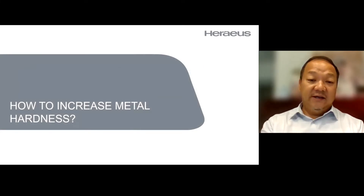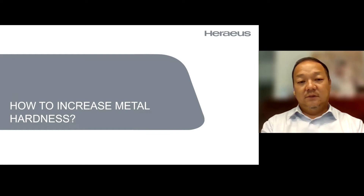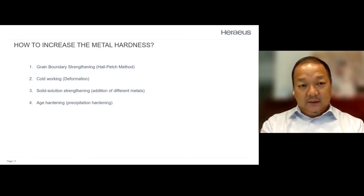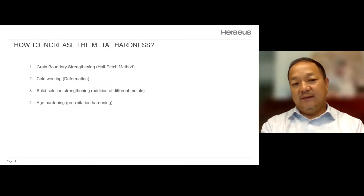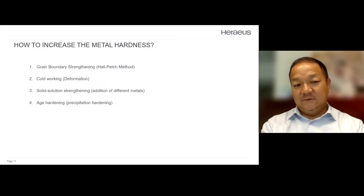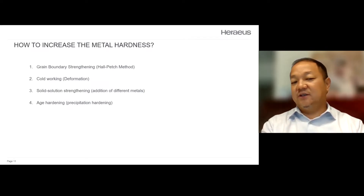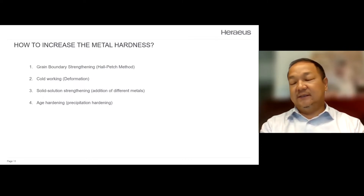How can we increase metal hardness? Right now we have around four methods which can increase metal hardness: grain boundary strengthening, cold working, solid solution strengthening, and age hardening — especially age hardening, which we will talk about in detail afterwards.